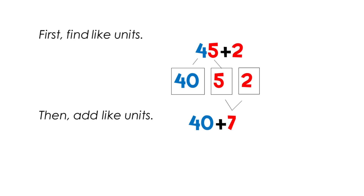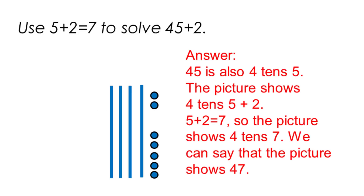Then we can add 40 plus seven. 45 is four tens and five. The picture shows four tens, five plus two. Five plus two equals seven, so the picture shows four tens and seven. We can say that the picture shows forty-seven.